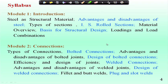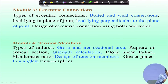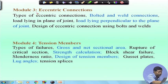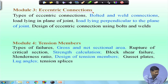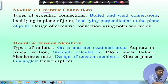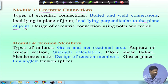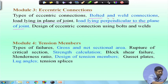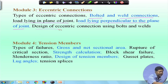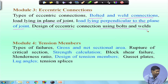Module 3 will discuss eccentric connections. Different types of eccentricity come into picture: when the load lies in the plane of the joint and when the load is perpendicular to the plane of the joint. Design criteria for both cases will be covered through bolted and welded connections, including how to start the design.